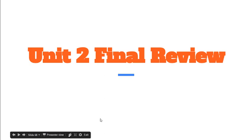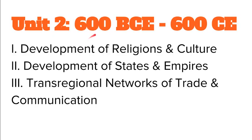Here we go with our first video lecture for unit number two. There are three parts to this video, and I'm going to go through the first part today. Here we have the first key element, the key idea: the development of religions and culture. Unit two goes from 600 BCE to 600 CE — we normally call this the classical era.